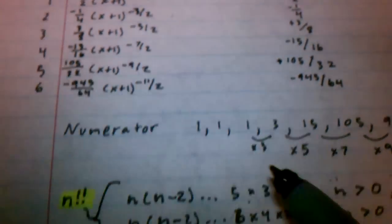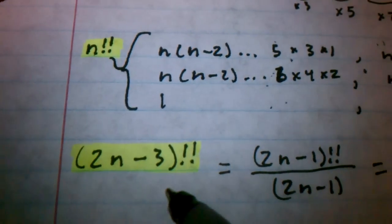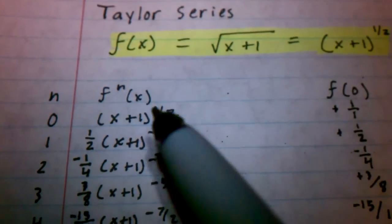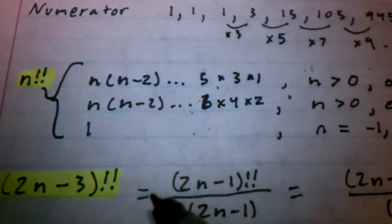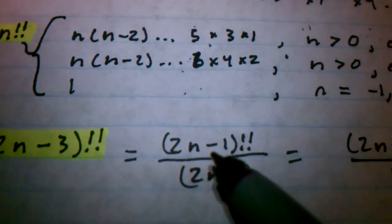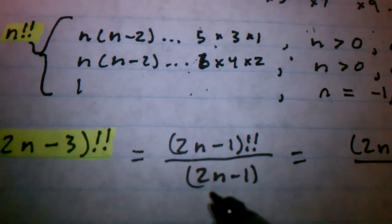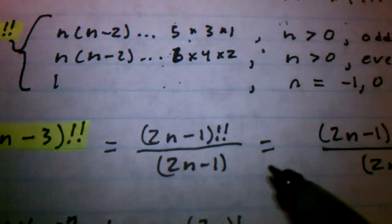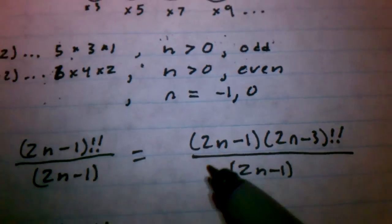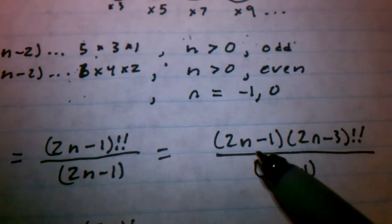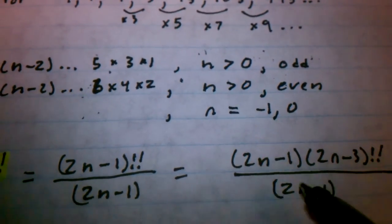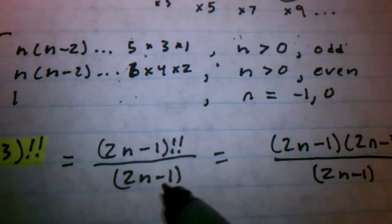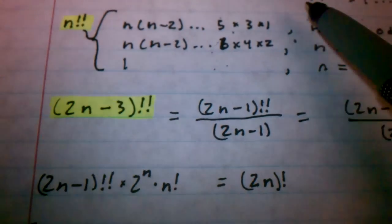That's how we get the trend here. So, 2n minus 3 works, except for the very first couple values. So, we're going to rewrite it as 2n minus 1 double factorial over 2n minus 1. How does this work? Because 2n minus 1 factorial is the same as 2n minus 1 times 2n minus 3 double factorial. Those two would essentially cancel out, so these are equivalent values.